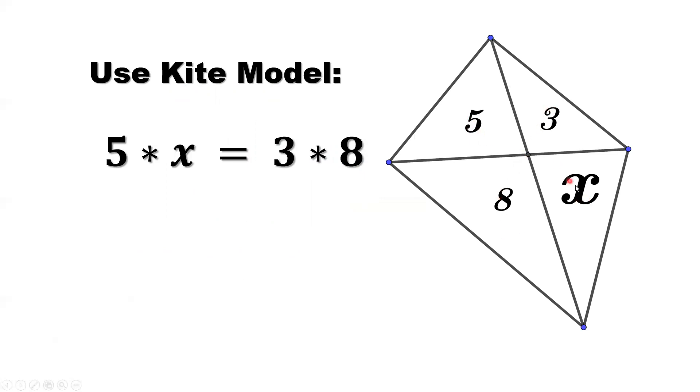Solving this, 3 times 8 is 24 divided by 5, that's x.